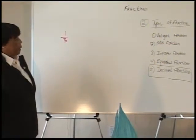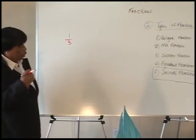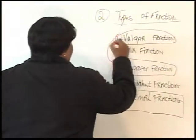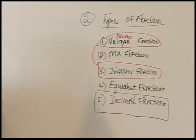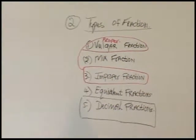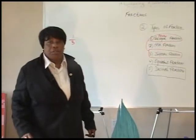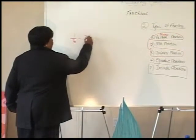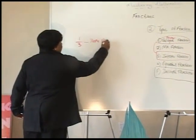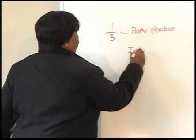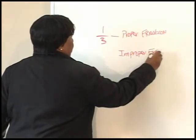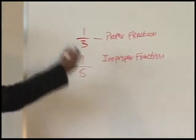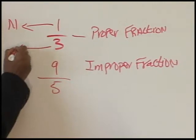We know that a vulgar fraction can be called a proper fraction. We also saw the word improper, and the prefix 'im' tells us right away it's the opposite. For a proper fraction, the numerator is smaller than the denominator. For an improper fraction, the numerator is larger than the denominator. Our top number is the numerator and our bottom number is the denominator.